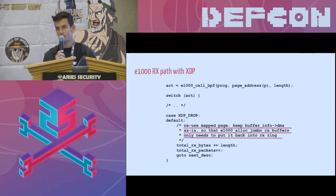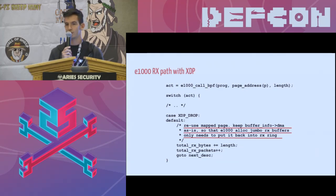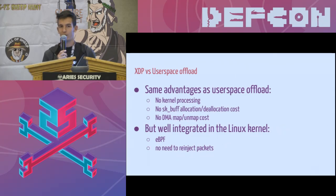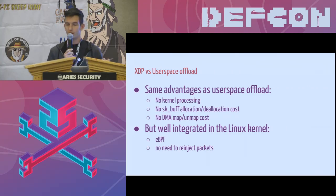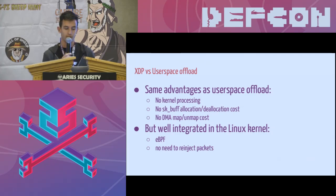If we look at one of the drivers that implemented XDP, we can see how the XDP drop action is actually similar to what we are already doing with user space offload — basically there is nothing to do. If you want to drop the packet, you just do nothing: you leave the packet buffer where it is in the network card ring and go to the next packet. There is no memory allocation or deallocation cost at all. XDP has the same advantages as user space offload — no kernel processing involved, no memory allocation cost, no DMA map and unmap cost which is a very expensive operation. But it also has additional advantages: you can use eBPF to program your filtering logic, and there is no need to re-inject packets because if a packet is not going to be dropped, it will just go through the network stack the usual way.